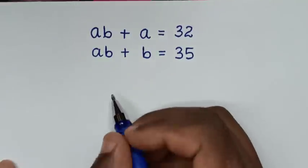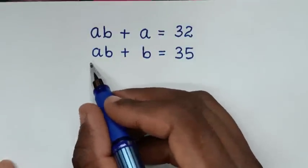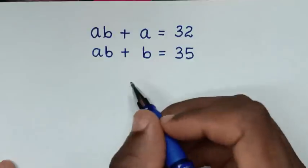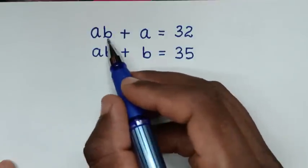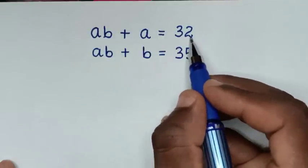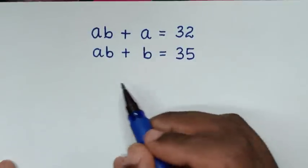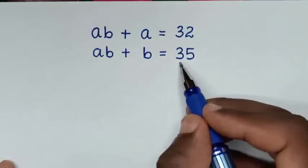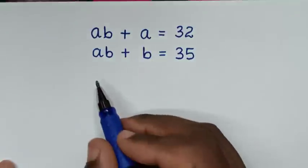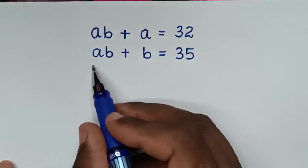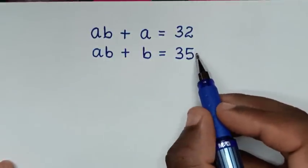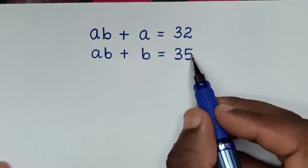Hello, you are welcome to solve this math problem, which is AB plus A is equal to 32, and AB plus B is equal to 35. We need to find the values of A and B from these two systems of equations.